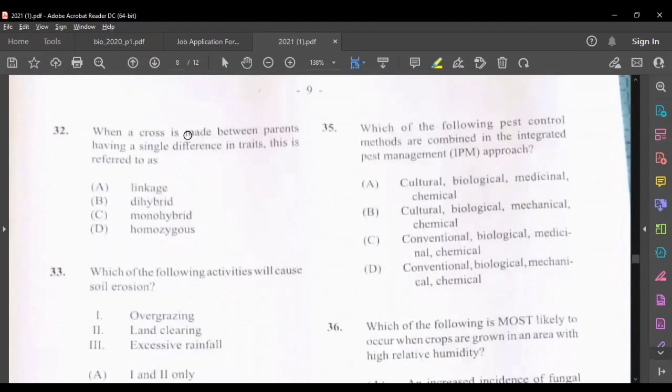Moving on to 32, when a cross is made between parents having a single difference in trait, this is known as single trait, that will be monohybrid cross.